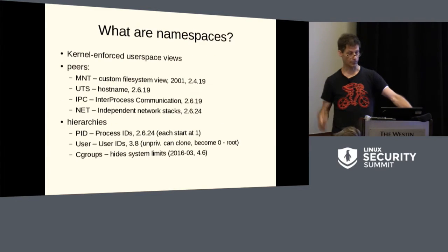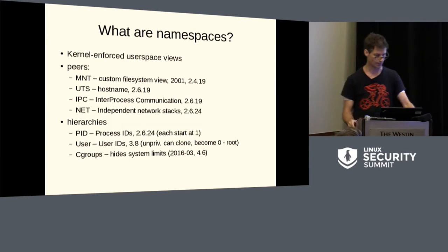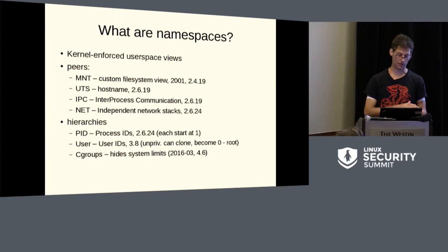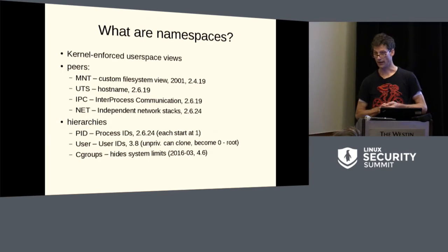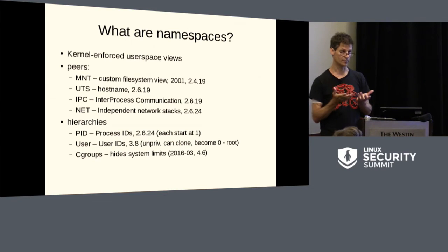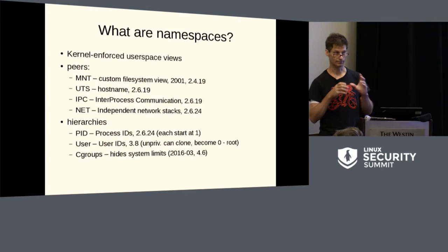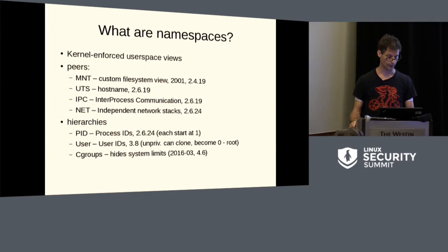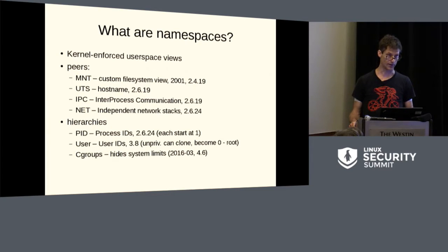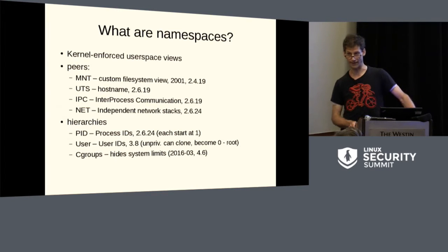What are namespaces? Namespaces are kernel-enforced user space views. It's possible to set things up so that from a set of namespaces you've got a limited view from user space of what's actually going on on the system. Various processes are compartmentalized and not able to see beyond their own scope. At the moment there are seven different namespaces. The peer namespaces include the mount namespace, which was the first to be introduced in 2001. From its naming, it looked like people thought it would be the only namespace — it's expanded since then.